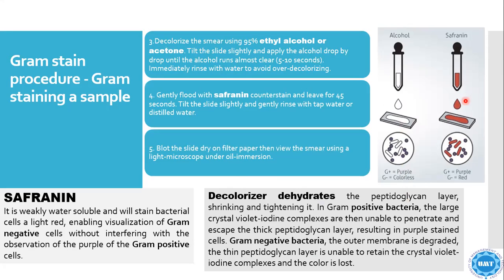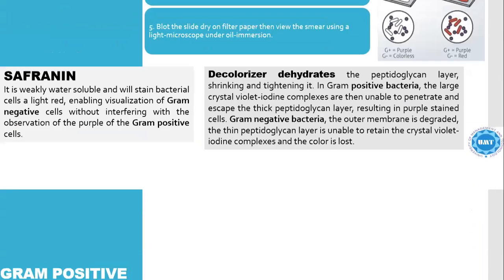Blot the slide dry on filter paper, then view the smear using a light microscope under oil immersion. Safranine is weakly water-soluble and will stain bacterial cells red, enabling visualization of gram-negative cells without interfering with observation of the purple of gram-positive cells. Decolorizer dehydrates the peptidoglycan layer, shrinking and tightening it. In gram-positive bacteria, the large crystal violet-iodine complexes are then unable to penetrate and escape the thick peptidoglycan layer, resulting in the purple stain. In gram-negative bacteria, the outer membrane is degraded and the thin peptidoglycan layer is unable to retain the crystal violet-iodine complexes, so the color is lost.